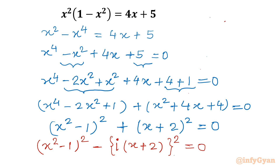We do this by using i, where i equals the square root of negative 1, so i squared equals negative 1. We place a minus i squared in front of the second square — since minus i squared equals plus 1 — which keeps the expression as a sum of two squares, but now allows us to rewrite it as a difference of two squares. I will use the difference of two squares formula.